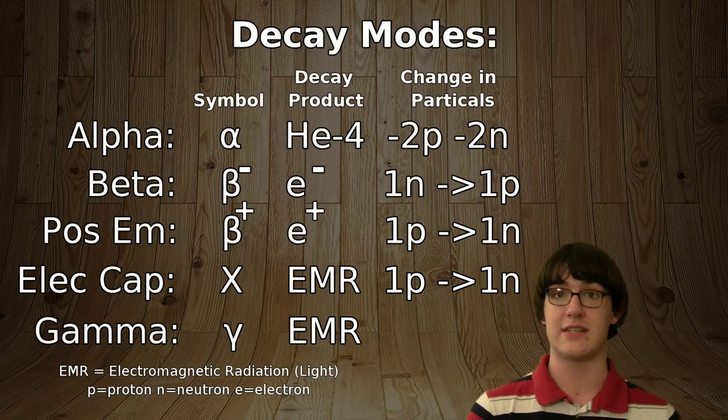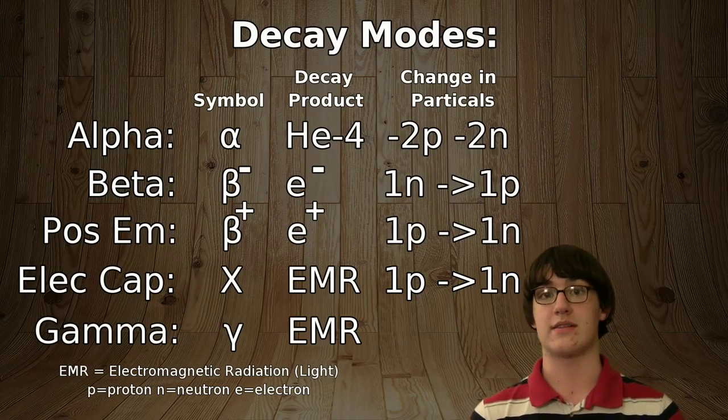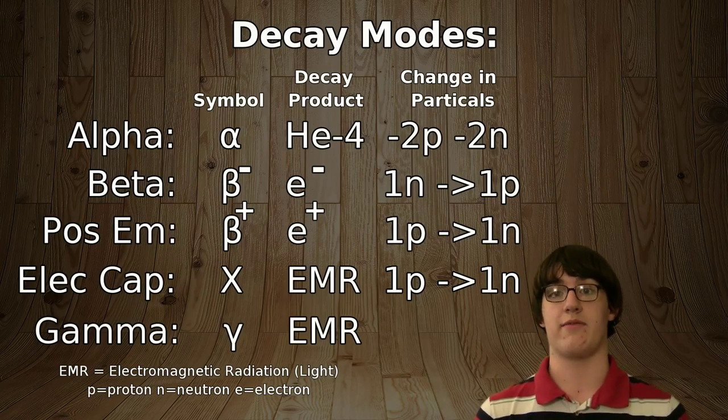Electron capture is when an electron turns a proton into a neutron and releases an X-ray, and gamma emission happens to calm down the nucleus and releases a gamma photon.